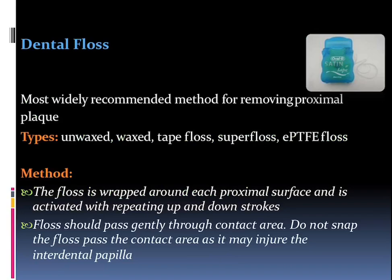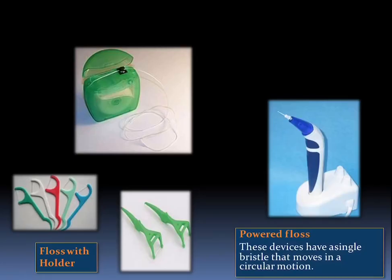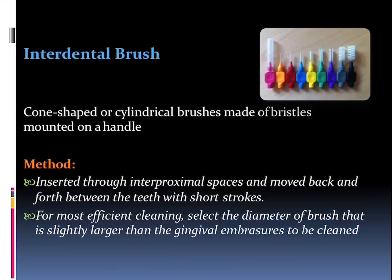The floss is taken into the interdental or proximal space and strokes are given in the vertical direction — up and down. The floss should gently pass through the contact area and should not injure the interdental papilla. Nowadays floss with holders are also available. There are pre-designed floss holders, powered floss with a single bristle that moves in a circular motion.